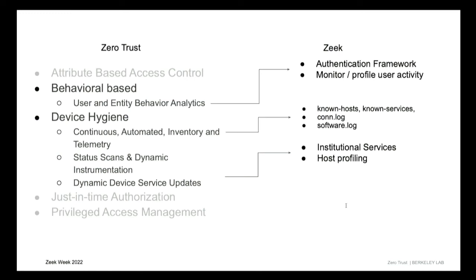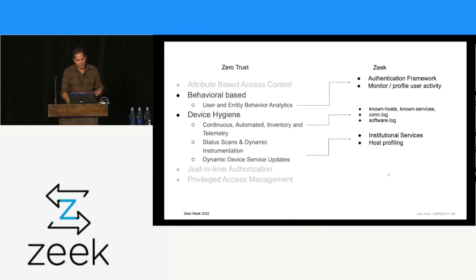Some things with zero trust, like attribute-based access control — I don't know exactly what that means or how to work with it. But behavioral-based resonates better: can we do anomaly detection based on behavior, encrypted or not? Maybe more signal analysis — where they are logging from, what they're doing. Maybe profile users. Then there's device hygiene, another zero trust recommendation. Can we do continuous automated inventory and telemetry? We have known host and known services — does that give us a good inventory, or can we improve upon it? And dynamic device service updates — can we do something like host profiling and institution services?